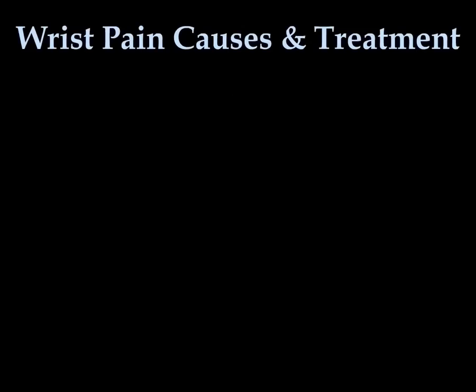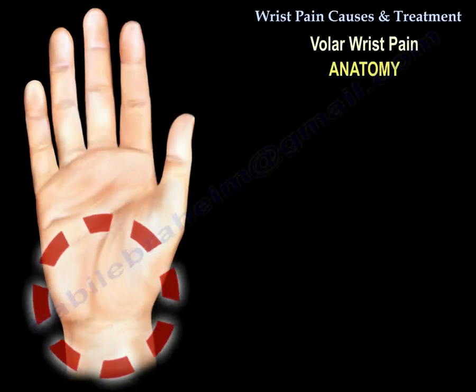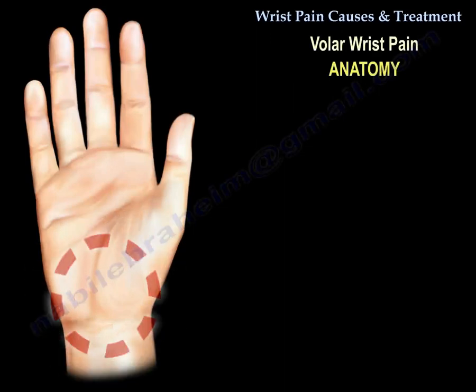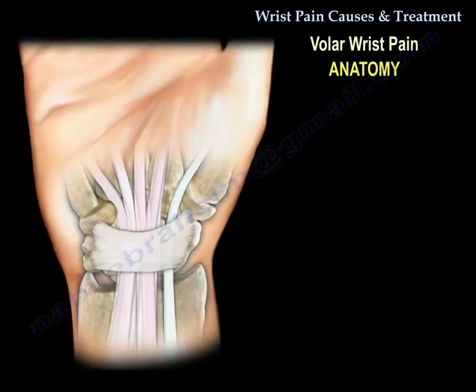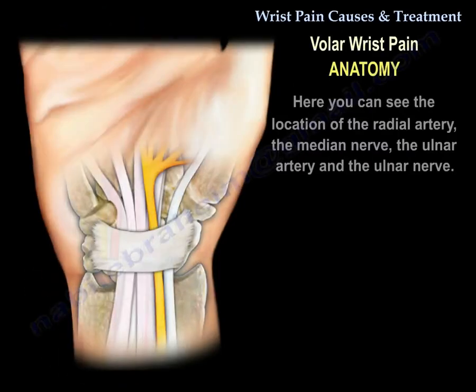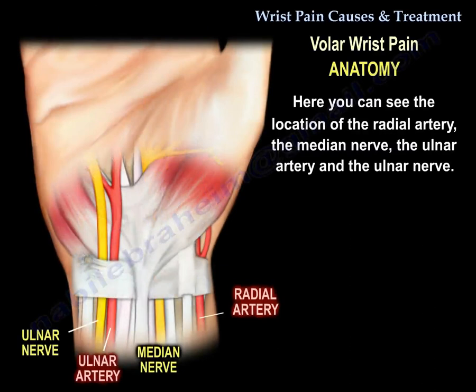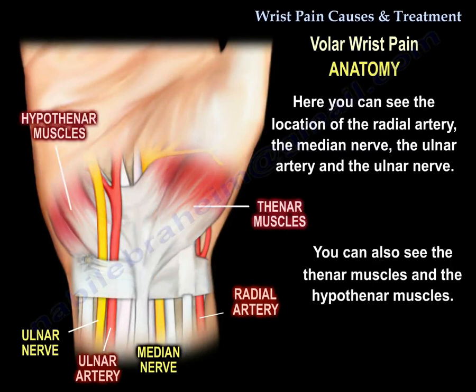Wrist pain causes and treatment. Here is the important anatomy in the volar aspect of the wrist. You can see the location of the radial artery, the median nerve, the ulnar artery, and the ulnar nerve. You can also see the thenar muscles and the hypothenar muscles.